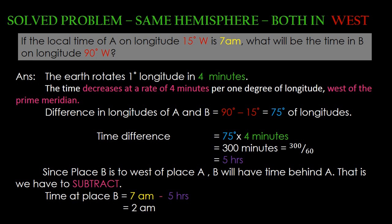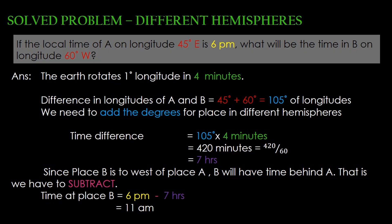Since place B is to the west of place A, we will have time behind A — that is, we have to subtract. Time at place B is equal to 7 am minus 5 hours, which is equal to 2 am.